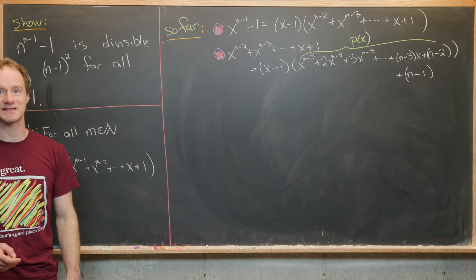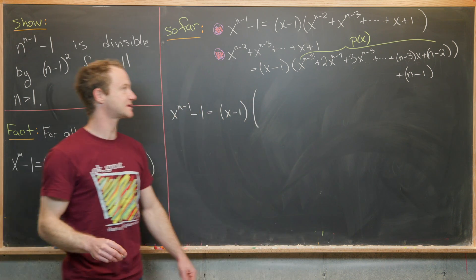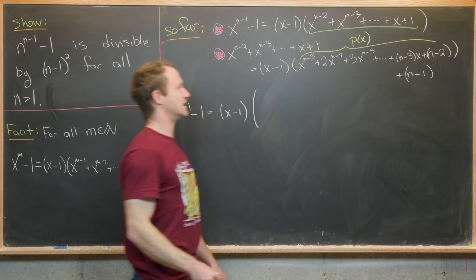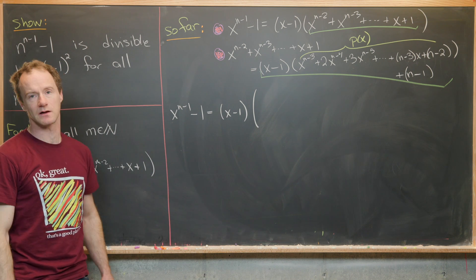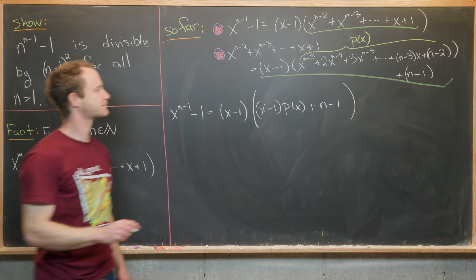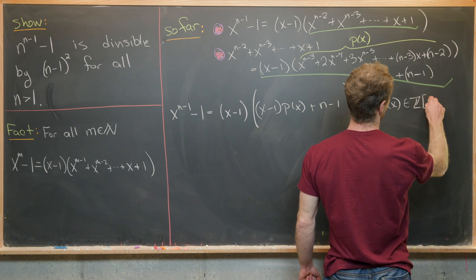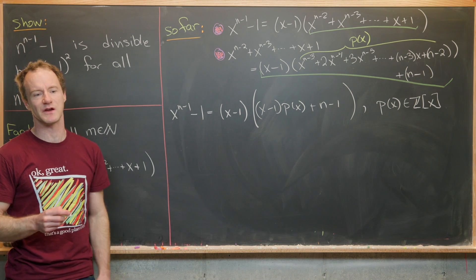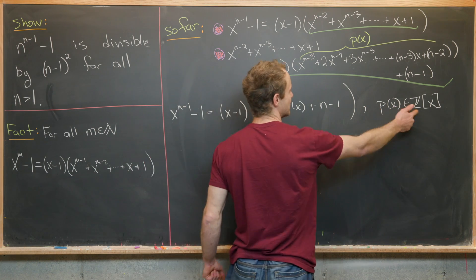Pushing these two facts together, x to the n minus 1 minus 1 equals x minus 1 times the inner sum, which can be rewritten as x minus 1 times the quantity x minus 1 times p of x plus n minus 1. It's very important to notice that p of x is a polynomial with integer coefficients — we denote this p of x in ℤ[x], the space of polynomials with integer coefficients. We obtained this by construction, though a non-constructive argument using theorems on factorization of integer polynomials also exists.